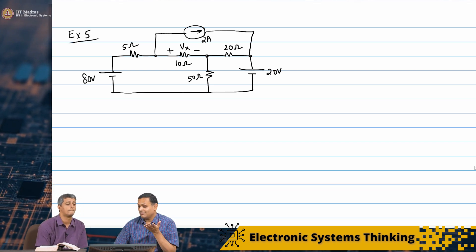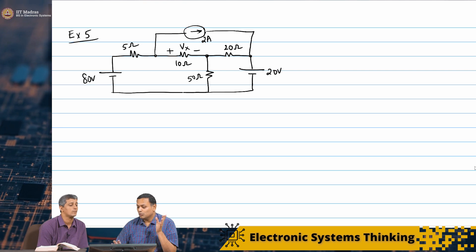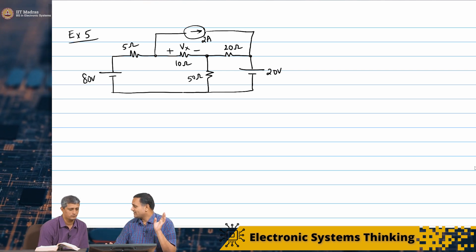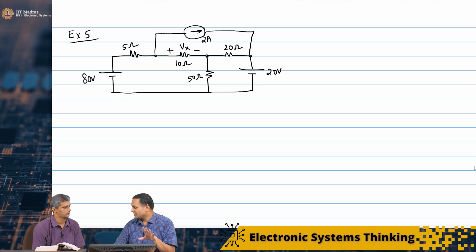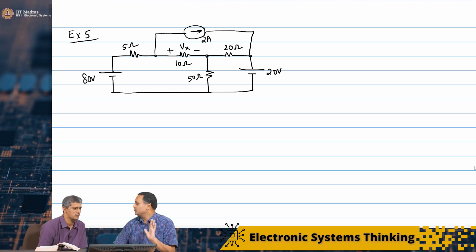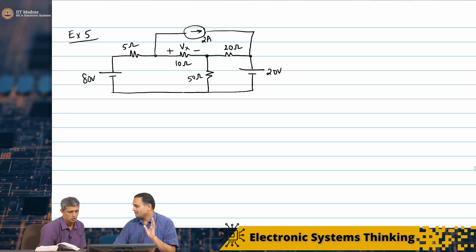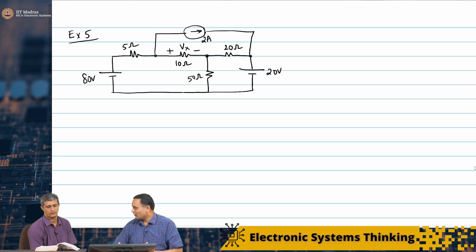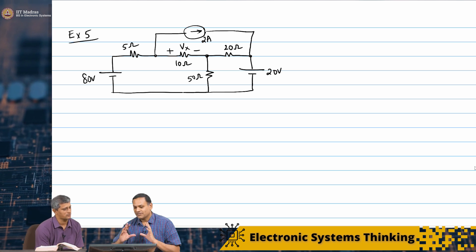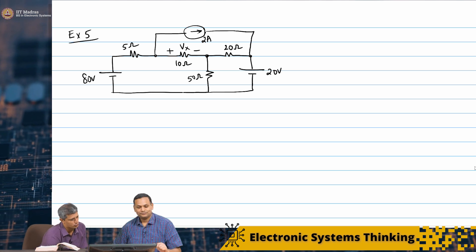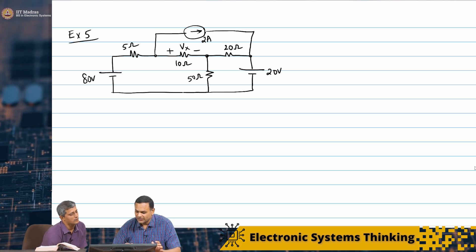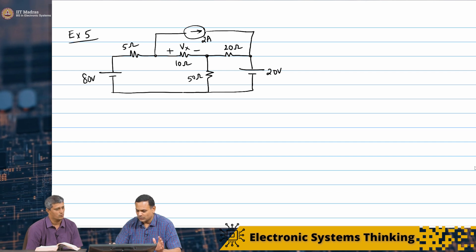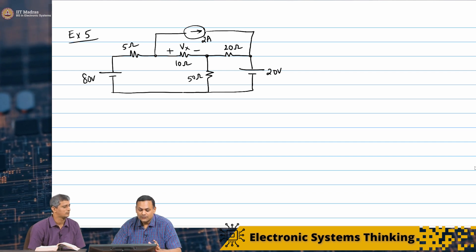Well, you can do brute force KVL, KCL — mesh equations. Or use superposition. We will use superposition, now that we know superposition is a very powerful technique. We should use it. We will apply the voltage and current sources one by one.